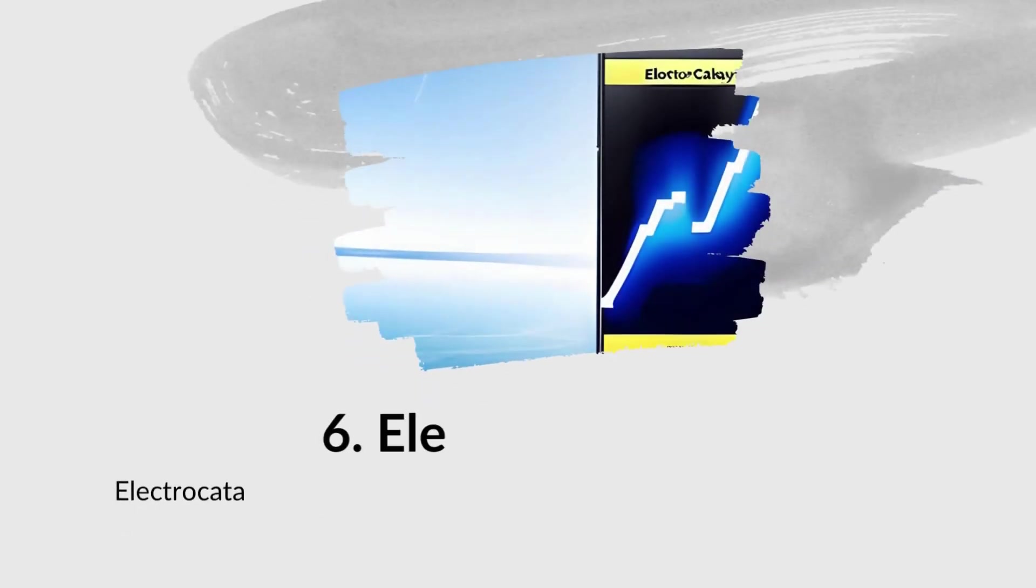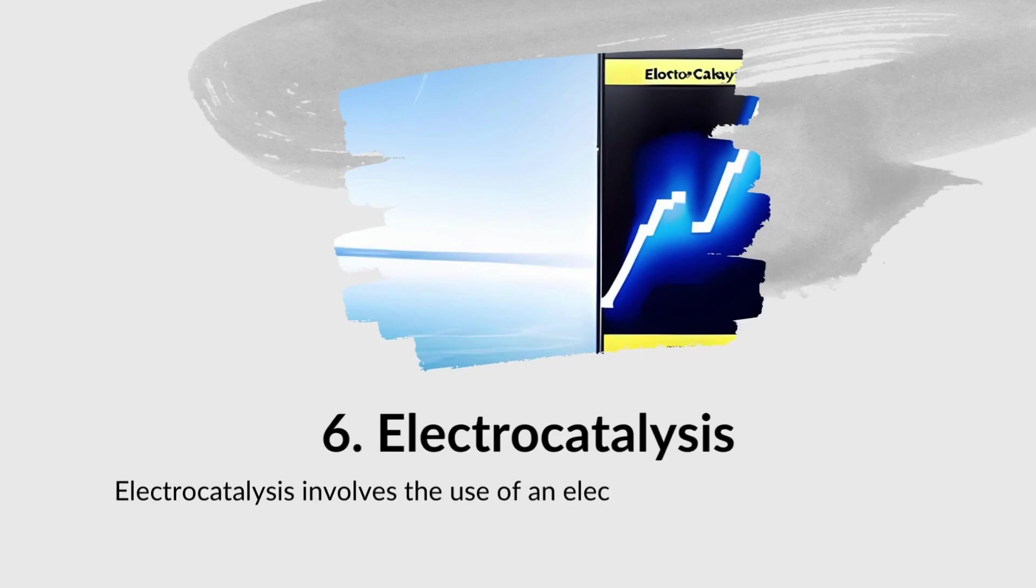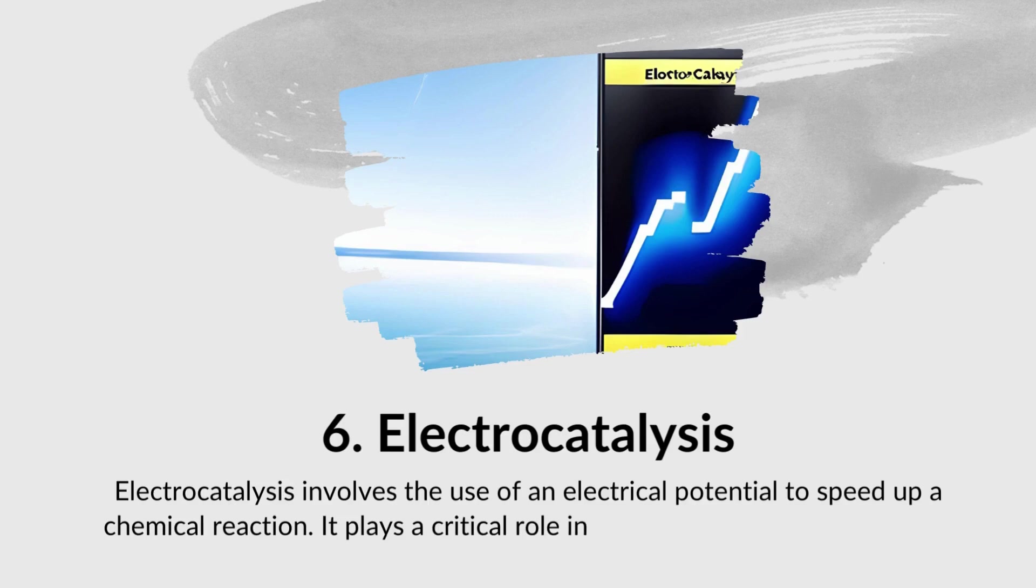Sixth is electrocatalysis. Electrocatalysis involves the use of an electrical potential to speed up a chemical reaction. It plays a critical role in energy conversion and storage technologies such as fuel cells and electrolyzers.